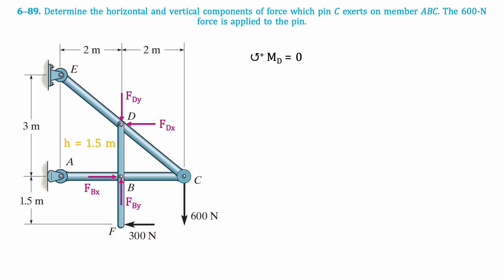Now we can take the moment about point D. The reaction components at D and the Y component of B pass through point D, so they are not included in the calculations. We get the following equation, which after isolating for FBX results in 600 newtons.